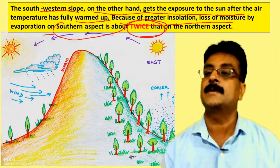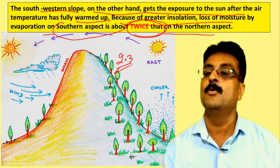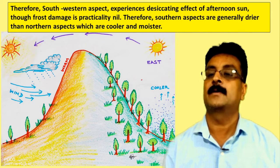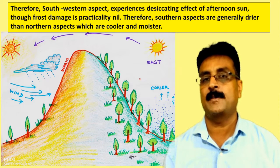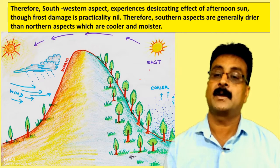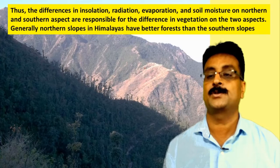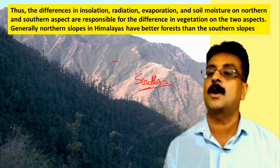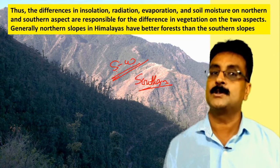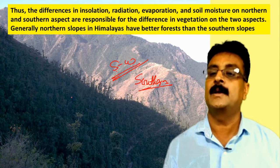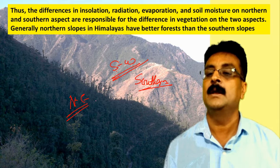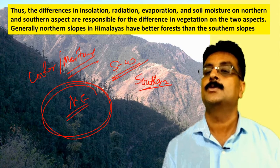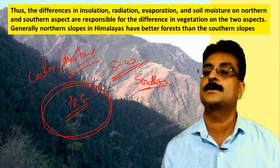The southern aspect has 2.3 times more insolation than the northern aspect, making it twice as desiccating. As a result, the southern aspect has very little or stunted vegetation, while the north-east aspect has cooler, moist, and luxuriant vegetation. This is illustrated by a photograph from Mussoorie Hills showing very sparse vegetation on the south or south-west aspect and very luxuriant growth on the north-east aspect of the same hill, because of cooler and moisture-retaining conditions.